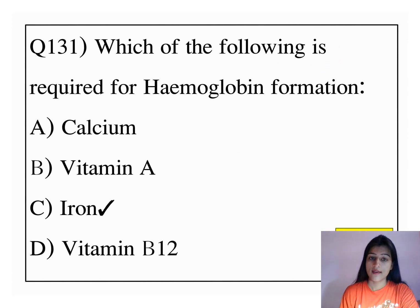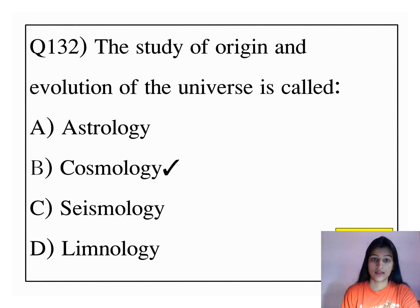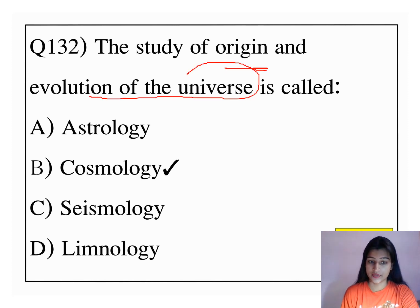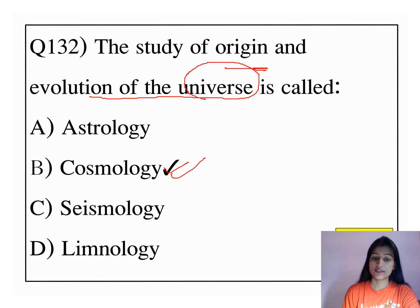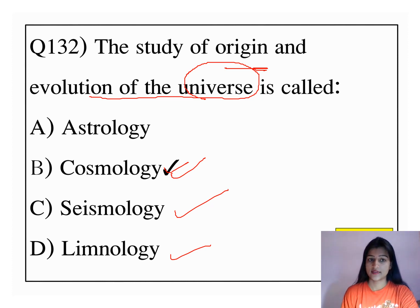Which of the following is required for hemoglobin formation? Iron is required for the formation of hemoglobin. The study of the origin and evolution of the universe is called cosmology. Seismology is the study of earthquakes and seismic activities. Limnology is the study of inland waters such as rivers, lakes, and oceans.